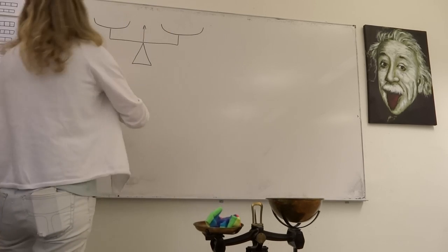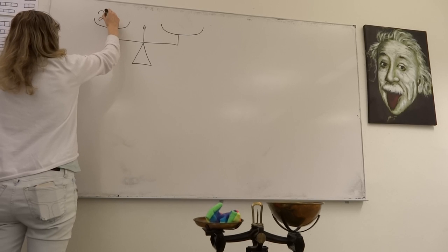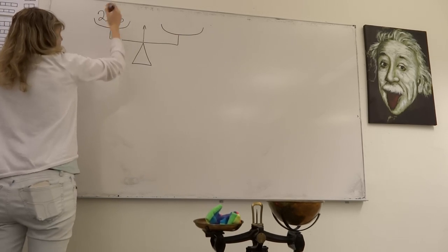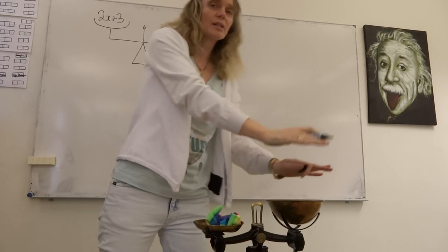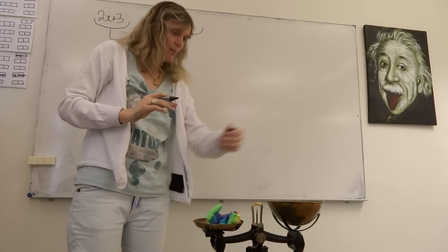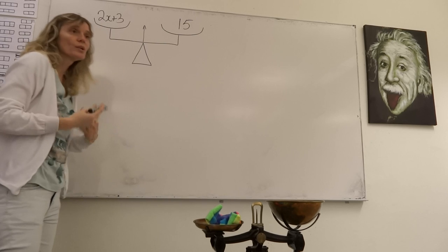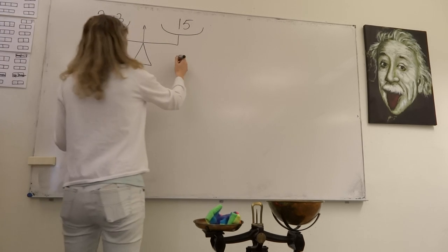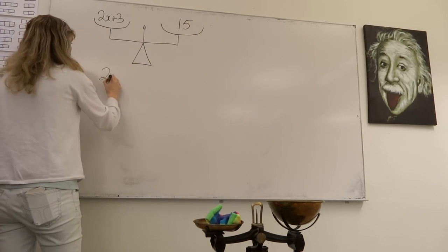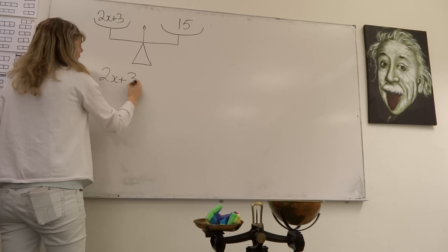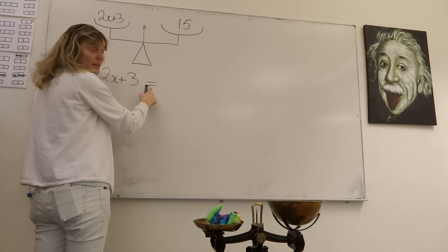So in this side of my scale I have 2X plus 3, and I've counted all the ones in the left-hand side of my scale. When it's balanced now in the middle, I have 15. So if we're to look at this as an equation, we'd be able to say that our 2X plus 3 balances, the equal sign, 15.